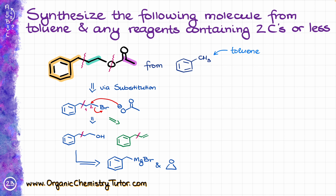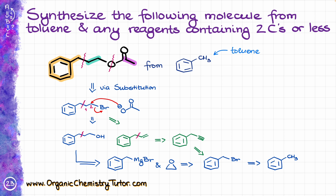The blue method uses the corresponding benzylmagnesium bromide, which we get from benzyl bromide itself — made from our starting material, toluene. In the green method, the alkene we need comes from the corresponding alkyne, which in turn comes from benzyl bromide via a substitution reaction. So both methods start from the same starting material, and in the middle we have two different options — the blue method or the green method — depending on which reactions you've covered in your course and which you like most.